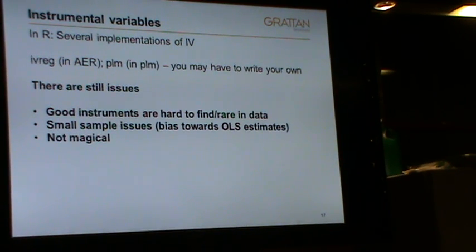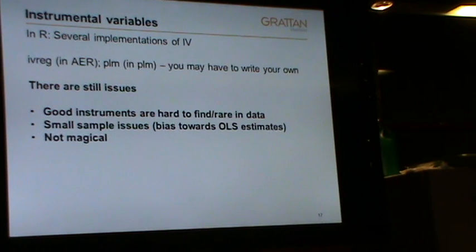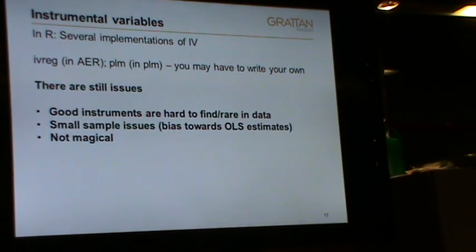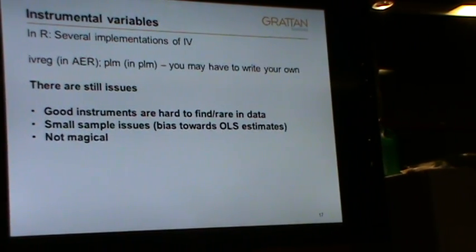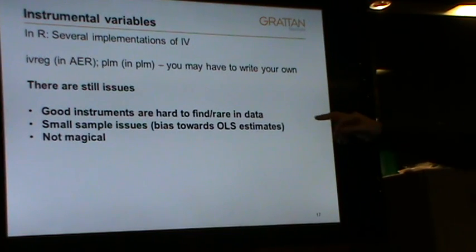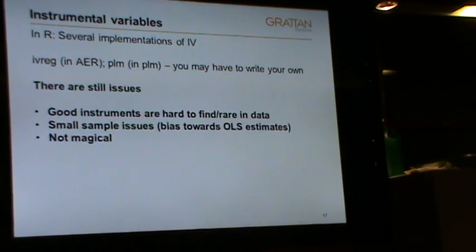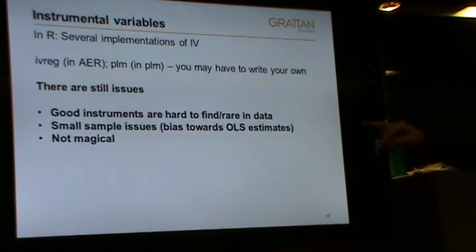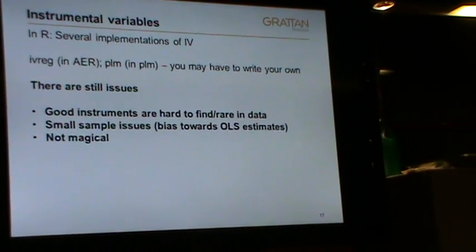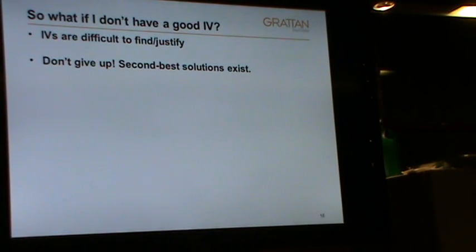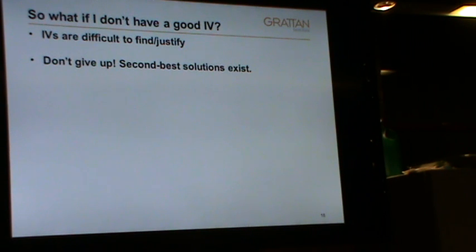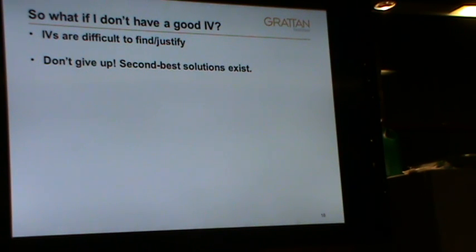There are still really big issues with this approach. Good instruments are almost impossible to find. If you have a really good instrument you can get a paper in a top journal. In small samples they're biased towards an OLS estimate — they're not magical estimators. So that's what you should do if you follow textbooks. But what if you've got no instrument and still want an estimated causal effect? There are second-best solutions, and I think matching is a good one.